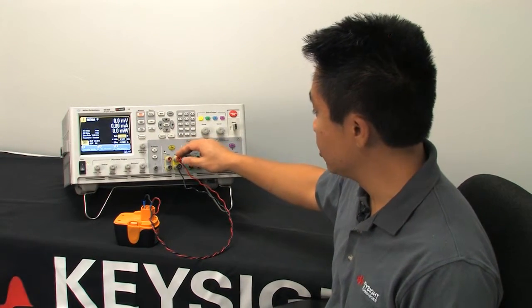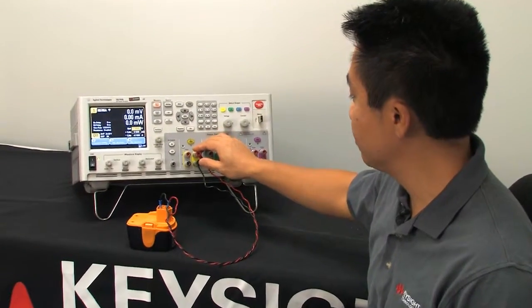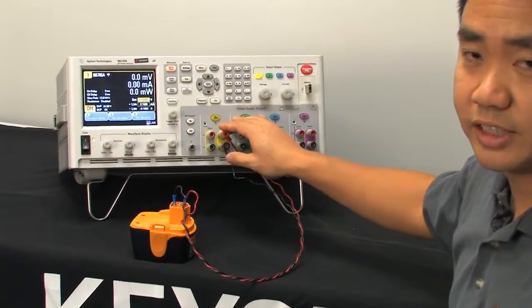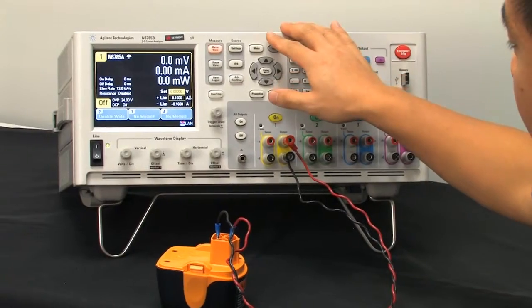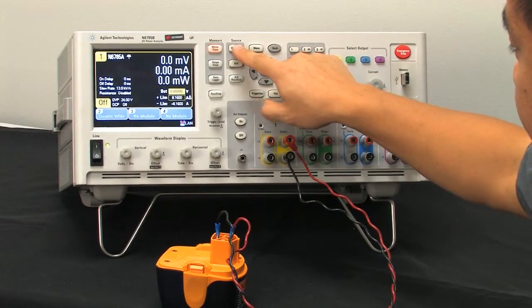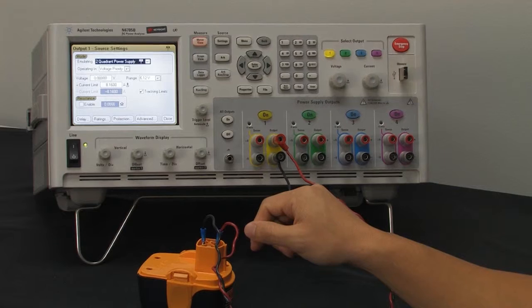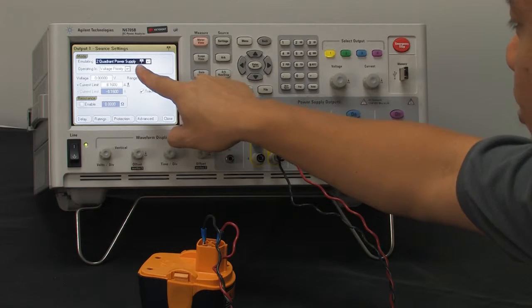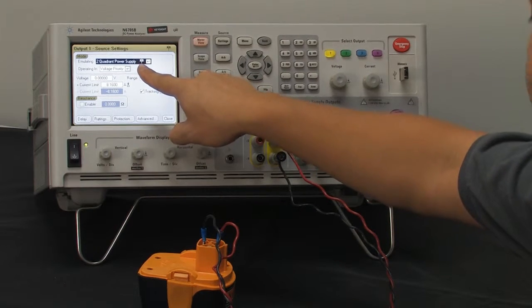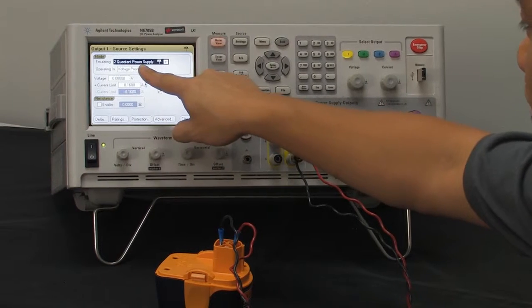So let's go ahead and go to the front panel here and we'll set up the source measure unit to act as an electronic load. The first thing we're going to do is press the settings button. By default, the emulating mode on all SMUs as it comes up is always two quadrant power supply.